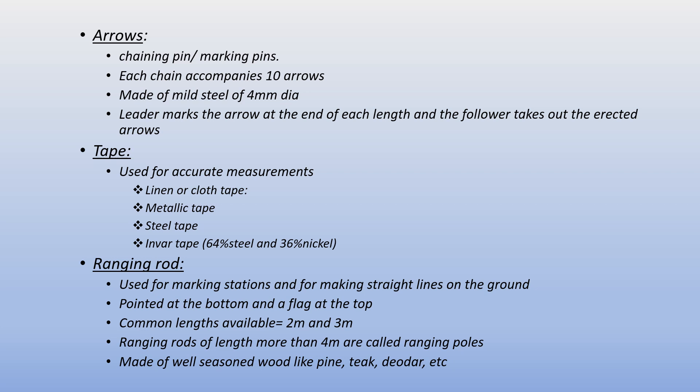Arrows are also known as chaining pins or marking pins. Each chain is accompanied by 10 arrows made of mild steel of 4 mm diameter. The leader marks the arrow at the end of each chain length and the follower takes out the erected arrows.